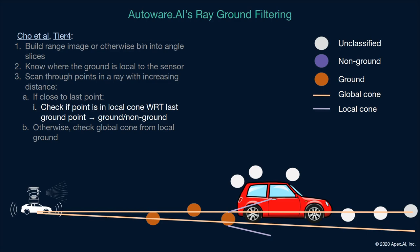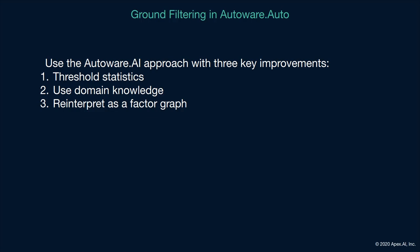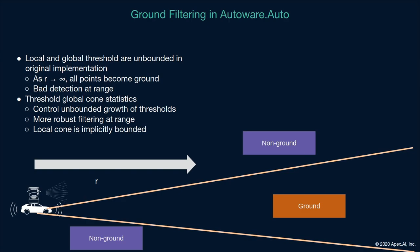One thing to notice about this algorithm compared to the standard ray-ground filtering approach is that we can go from non-ground points back to ground points. The approach used in Autoware Auto is the same as Autoware AI's improved ray-ground filtering algorithm, but with three additional improvements: thresholding statistics, additional domain knowledge, and reinterpreting the problem as a factor graph. The first improvement involves thresholding statistics — a cone in the mathematical sense is unbounded, so points far away from the vehicle are more likely to be considered ground points, resulting in bad detections at distance. The solution is to limit the size of the global cone, giving better detection at a distance. The local cone is implicitly bounded because locality is only locally defined.